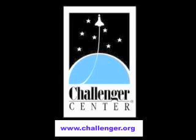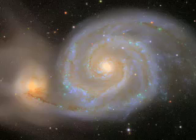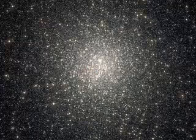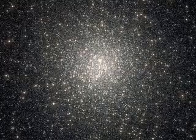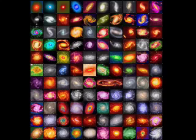Galaxies are large systems of stars and interstellar matter, typically containing several million to some trillion stars. Galaxies can be as big as a few thousand to several hundreds of thousands of light years across, and are typically separated by millions of light years distance. It is estimated that there are over 100 billion galaxies in the universe.